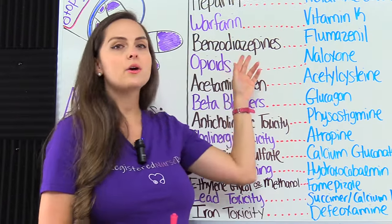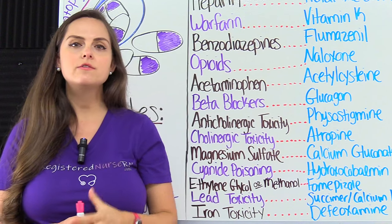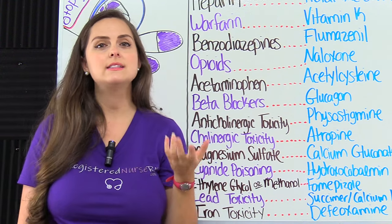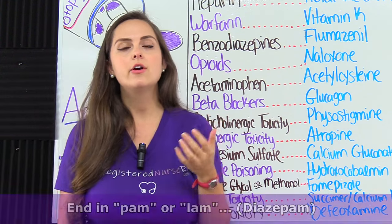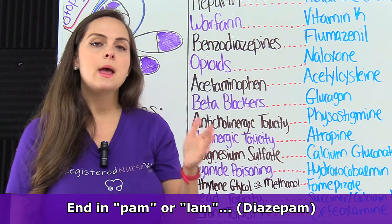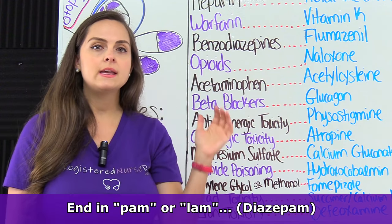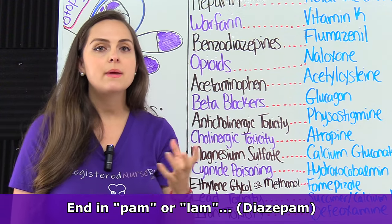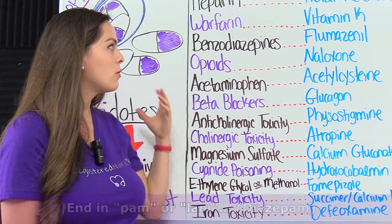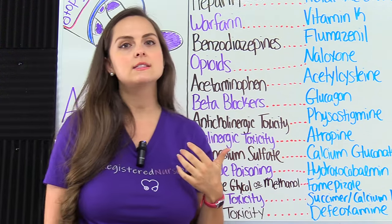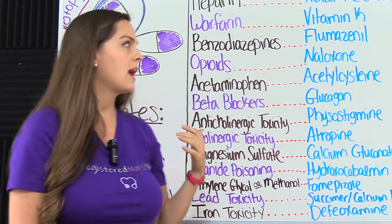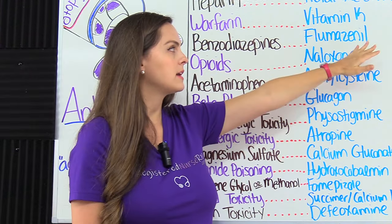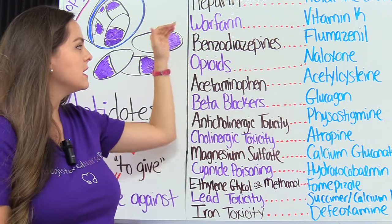Then we have benzodiazepines. These are very strong sedative drugs that are highly addictive. A lot of their medication names end in -PAM (P-A-M) or -LAM (L-A-M), such as diazepam — that's Valium. If a patient takes too much of this, they can have adverse effects, and we can give flumazenil. That's the antidote for those.